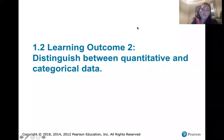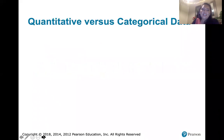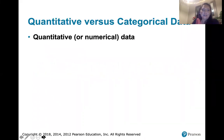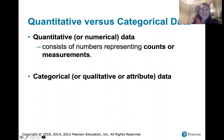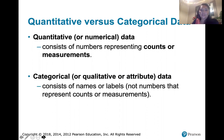In this video, we discuss the difference between quantitative and categorical data. Quantitative data is pretty much what you would expect it to be — it's numerical data. It consists of numbers, and those numbers represent counts or measurements. Categorical data, sometimes called qualitative data or attribute data, consists of names or labels, not numbers that represent counts or measurements.